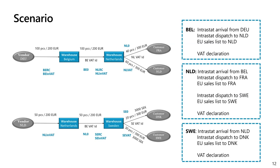Let's look in more detail at the scenario we'll be using in the demos today. As Adam mentioned, in the Belgium legal entity there are two additional VAT registrations — in Netherlands and in Sweden. We'll concentrate on how to execute reporting for Netherlands and for Sweden from the Belgium legal entity. Several documents are already posted, so we are ready to execute the reporting. In the first goods flow, we start with a purchase from a vendor in Germany to a warehouse in Belgium.